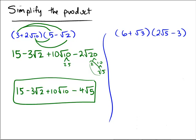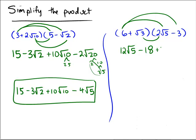Let's try the next one. First: 6 times 2√5 gives us 12√5. Outside: 6 times minus 3 is minus 18 — nice whole integers there. Inside: we get plus 2√15. We don't need to worry about simplifying that since 15 is 3 times 5. Last: minus 3√3.